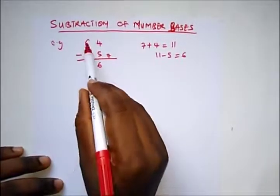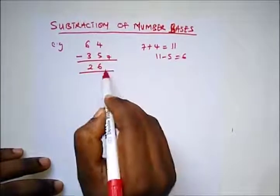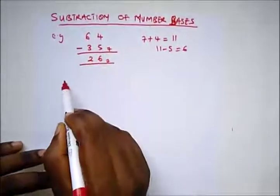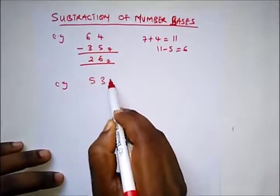So this will give us a 6. What's remaining? 5 minus 3 will give us 2. So this is our answer. Another example is 534.